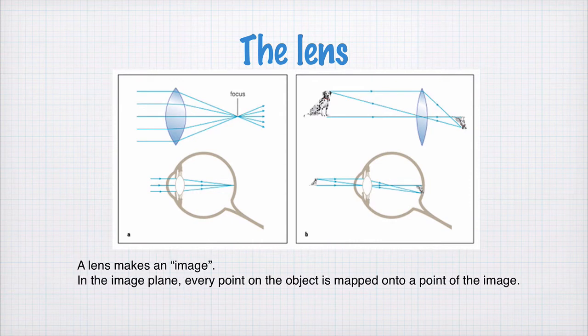The image plane, in the image plane every point on the object is mapped onto a point of the image. So the light from the ear gets mapped to an ear in the image down here. The light from the top of the leg will be mapped to some point in the image which corresponds to the top of the leg. So in the image plane every point in the object is mapped to a point of the image.